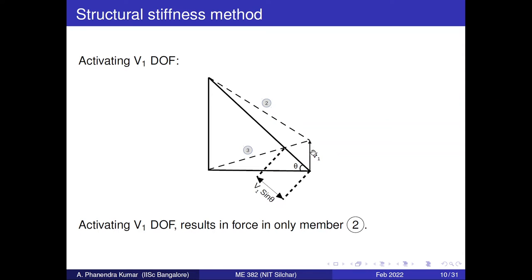When the v1 degree of freedom is activated, it is inclined to member 2 but perpendicular to member 3. If we resolve v1 along member 2, we get displacement v1 sin theta. But when we resolve v1 along member 3, it is v1 cos 90, which equals zero. So member 3 will not be displaced because of v1 activation — only member 2 will be displaced and develop a force.